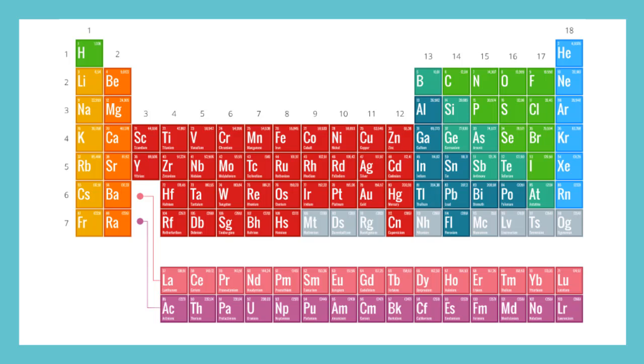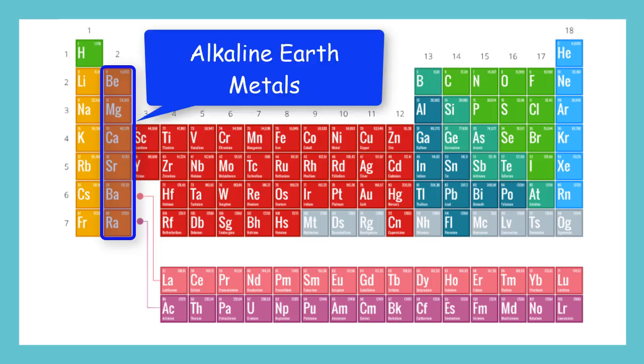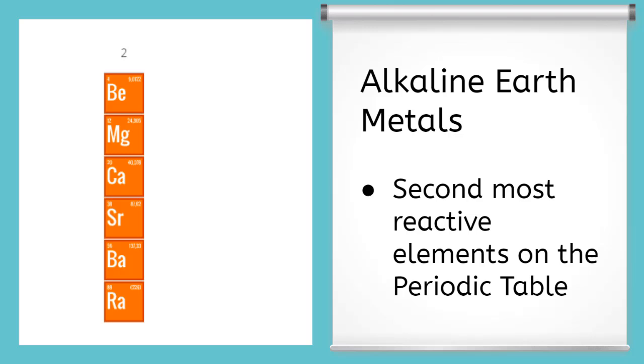Now, let's zoom in on group 2. Right next to our alkali metals live our alkaline earth metals. Just like alkali metals, the alkaline earth metals live in periods 2 through 7. This is the second most reactive group of elements on the periodic table. They are very unstable and reactive elements. But they are less reactive than the alkali metals.